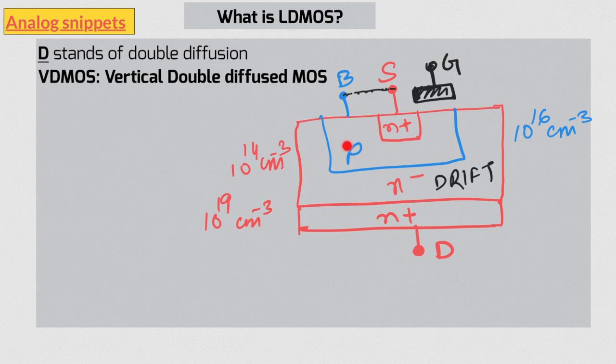But however great this vertical structure might be, it's not really cut out for standard CMOS processes. So now that we have understood the origins of letter D, let's return to LDMOS.